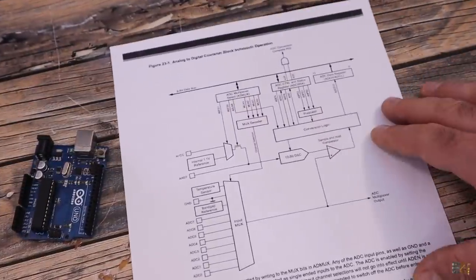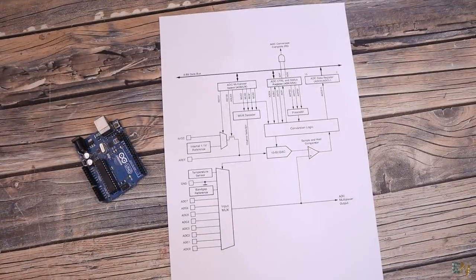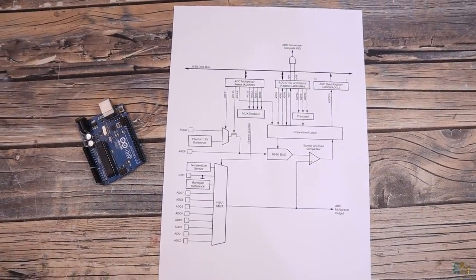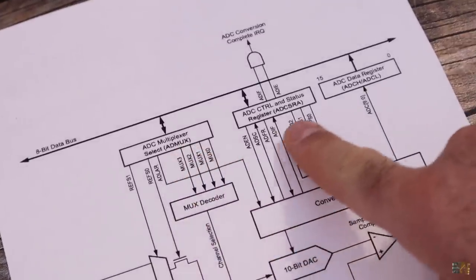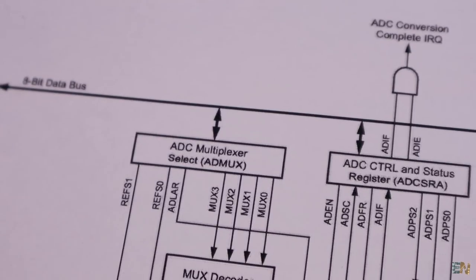These are all the blocks that we use for analog to digital conversion and by the end of this video you should know what each of these blocks will do. Here we have two main registers and we will learn what each of their bits will do in the code, registers ADMAX and ADCSRA.